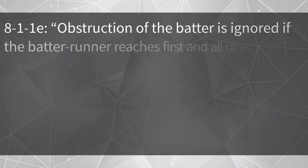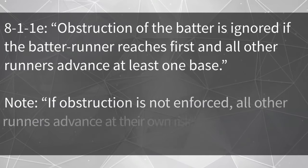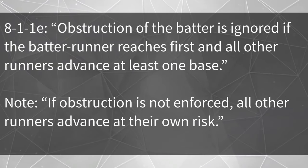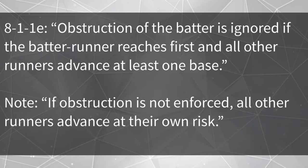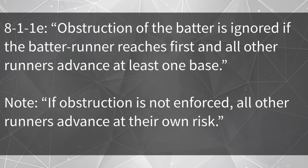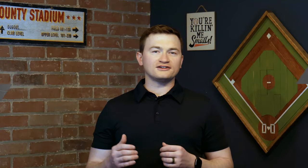But what happens if we have catcher's obstruction and the ball is put in play? Going back to rule 8-1-1e: obstruction of the batter is ignored if the batter runner reaches first and all other runners advance at least one base. If obstruction is not enforced, all other runners advance at their own risk. This tells us that if everyone advances at least one base safely, the obstruction is completely ignored. In fact, the offense won't have the option to try and have it enforced — once everyone, including the batter runner, advances one base safely, we will play on like it never happened.